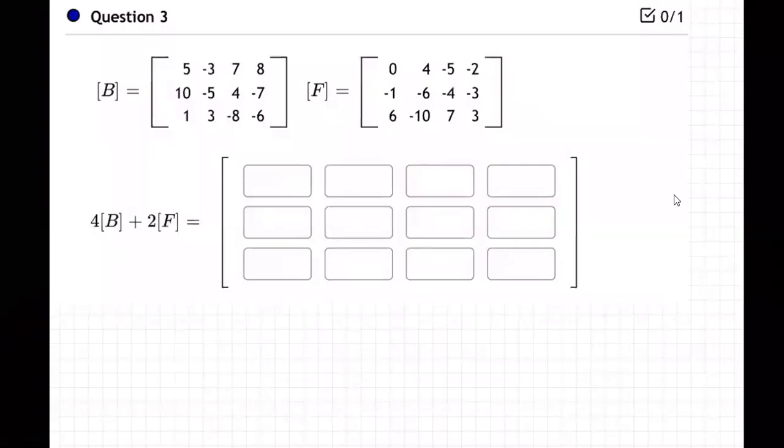Okay, so on this problem they're giving us matrix B, which is a big matrix, and matrix F. They're both three by four matrices - three down, four across. They're wanting to say, hey, take four times matrix B and add to that two times matrix F.